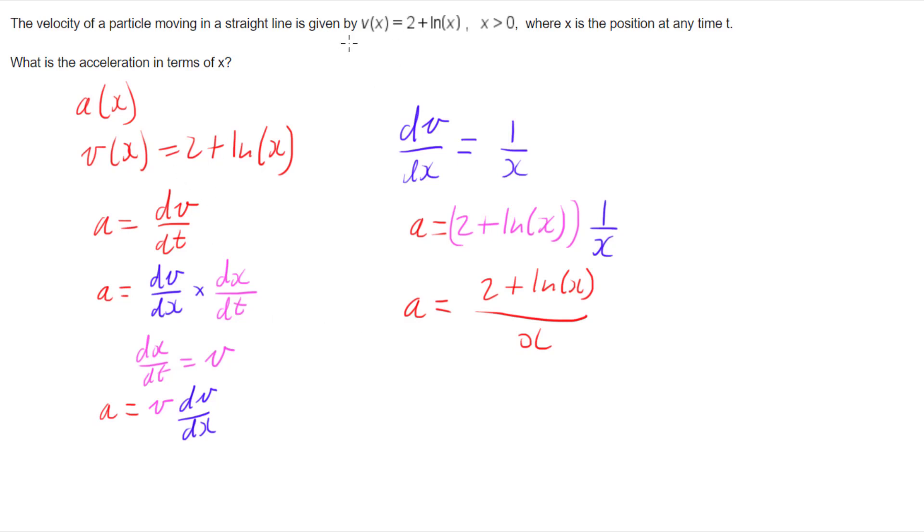So if you're given velocity as a function of position, you can use the chain rule to get acceleration as a function of position by multiplying the velocity with the derivative of velocity with respect to x.